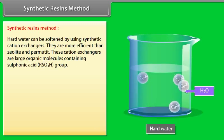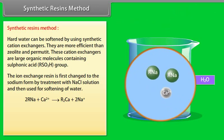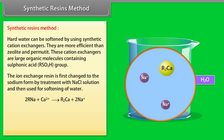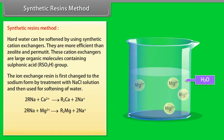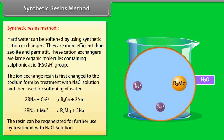Synthetic resins method: Hard water can be softened by using synthetic cation exchangers. They are more efficient than zeolite and permutate. These cation exchangers are large organic molecules containing sulfonic acid RSO3H group. The ion exchange resin is first changed to the sodium form by treatment with NaCl solution, and then used for softening of water. The resin can be regenerated for further use by treatment with NaCl solution.